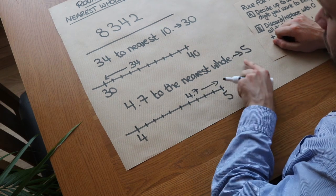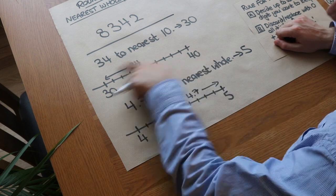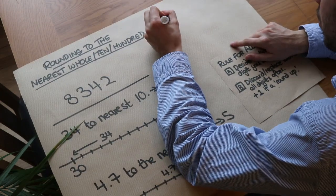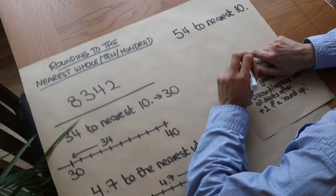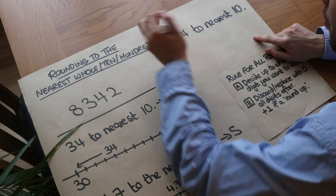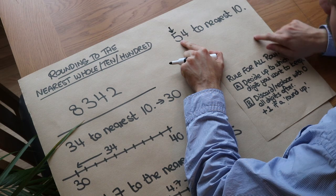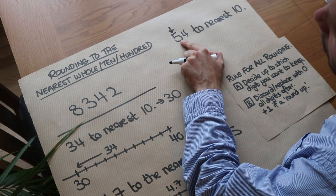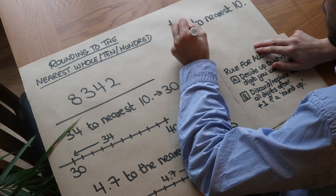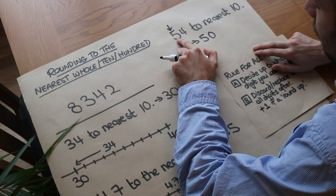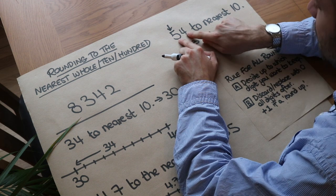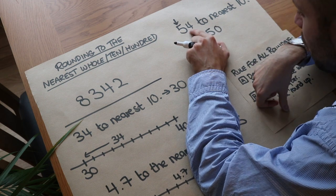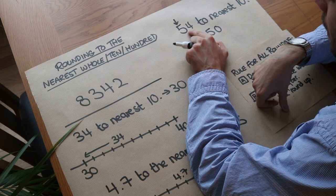Can we think of a rule to round without drawing a number line each time? Yes. You look at the digit you want to keep. For example, rounding 54 to the nearest ten: we keep everything up to the tens digit - the five - and everything after gets discarded, replaced with zero. We have zero units now. So that gives us 50. The five stays as a five because the next digit, four, is less than five.